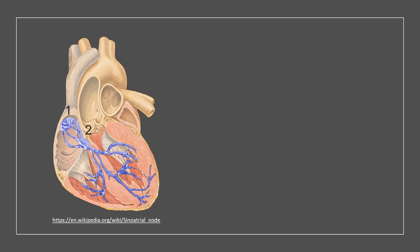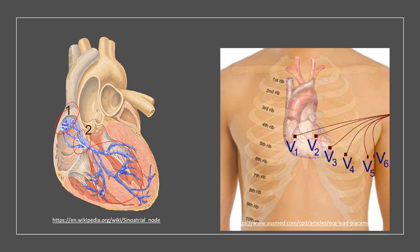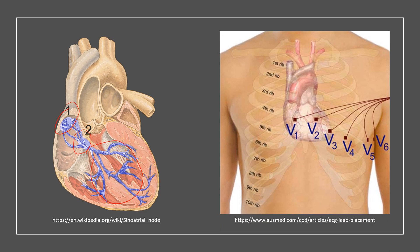Let's think about why. Here is our heart — number one is the SA node and number two is the AV node, with the conductive system below. This is where the SA node anatomically sits, and if you think about where we place our ECG leads on the chest wall, V1 is kind of just over the SA node. So it makes perfect sense that V1 is where I'm going to start looking for P waves if I can't see them anywhere else.